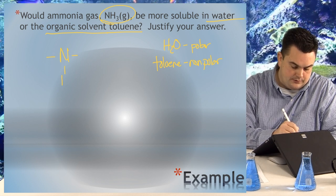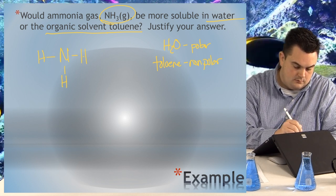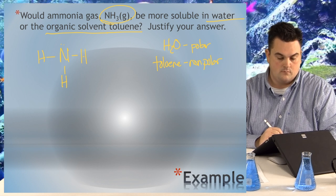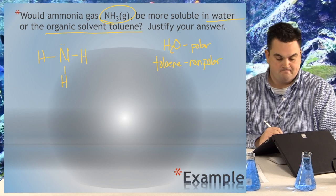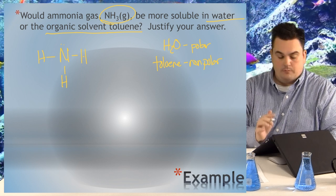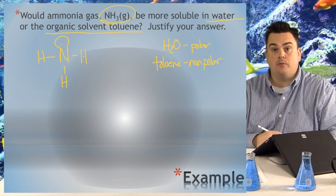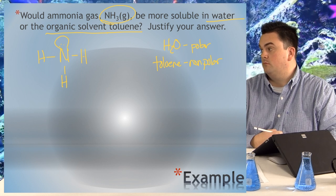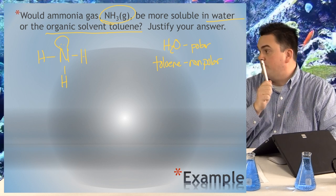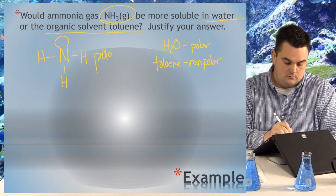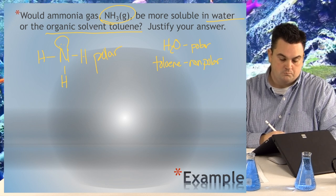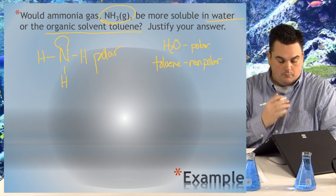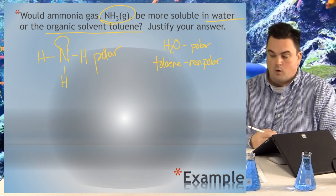Now that we have the Lewis structure, let's look at the symmetry to figure out if it's polar or nonpolar. Does it look the same on all sides? It's asymmetrical because there's a lone pair of electrons on top, making it a trigonal pyramidal shape. If it's asymmetrical, it's polar. Now we can make our final conclusion: like dissolves like — ammonia is polar, water is polar, so ammonia must be more soluble in water.